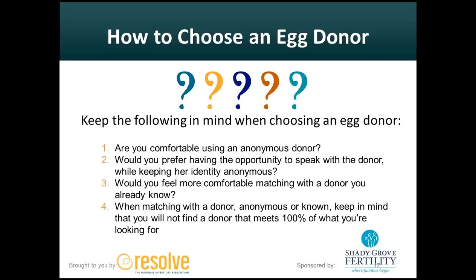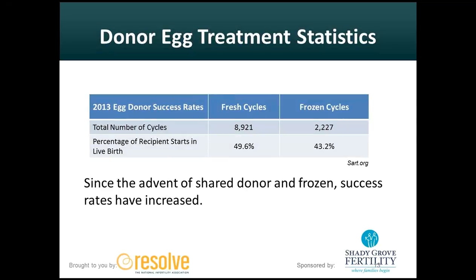Looking at the statistics — out of nearly 9,000 cycles, the success rate in terms of a delivered baby is roughly 50%, or 49.6% here. For frozen cycles, out of 2,200 cycles, the success rate is still quite high at 43%. This compares favorably to the human baseline success rate of probably 20–25% at best for non-infertile couples of optimal reproductive age.